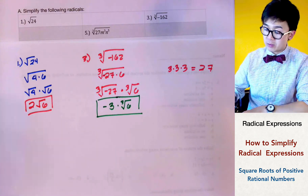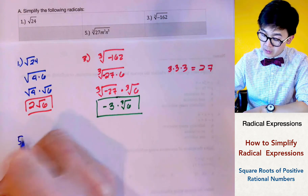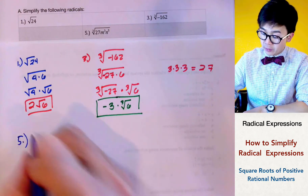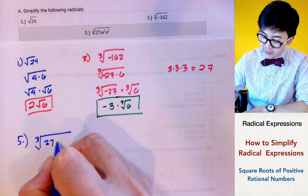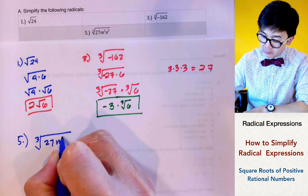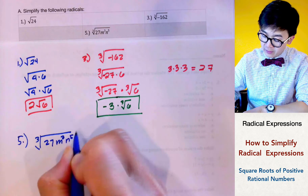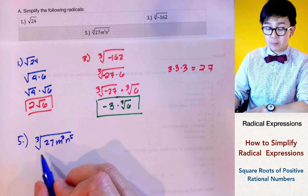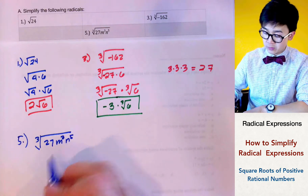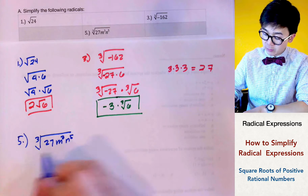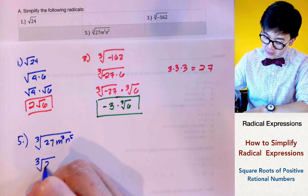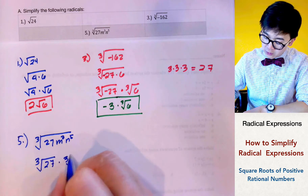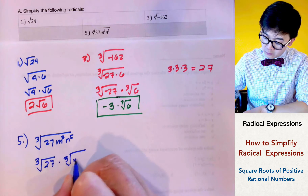For problem number 5, we have the cube root of 27m cubed n to the 5th. We know that 27 is a perfect cube. If we expand our expression, we can separate the cube root into the cube root of 27, the cube root of m cubed, and the cube root of n to the 5th.